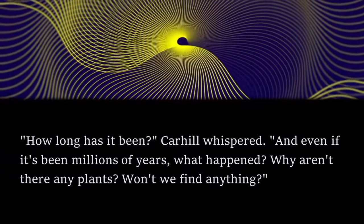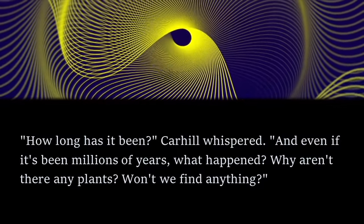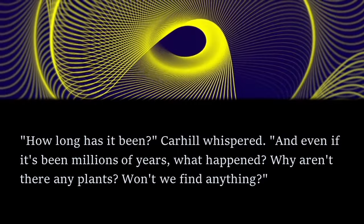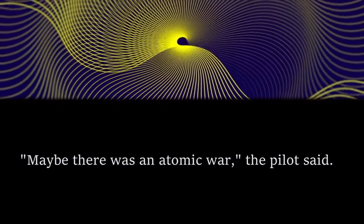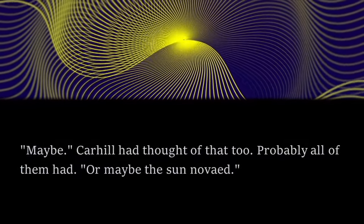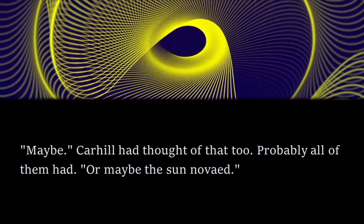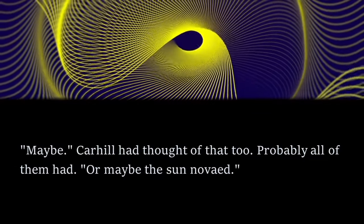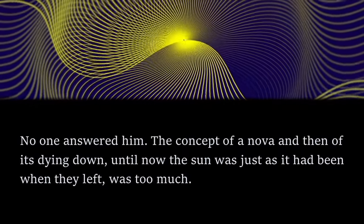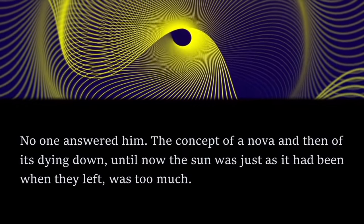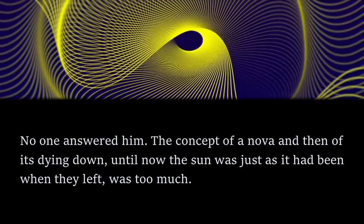And even if it's been millions of years, what happened? Why aren't there any plants? Won't we find anything? Maybe there was an atomic war, the pilot said. Maybe. Carhill had thought of that too. Probably all of them had. Or maybe the sun norved. No one answered him. The concept of a nova and then of its dying down, until now the sun was just as it had been when they left, was too much.